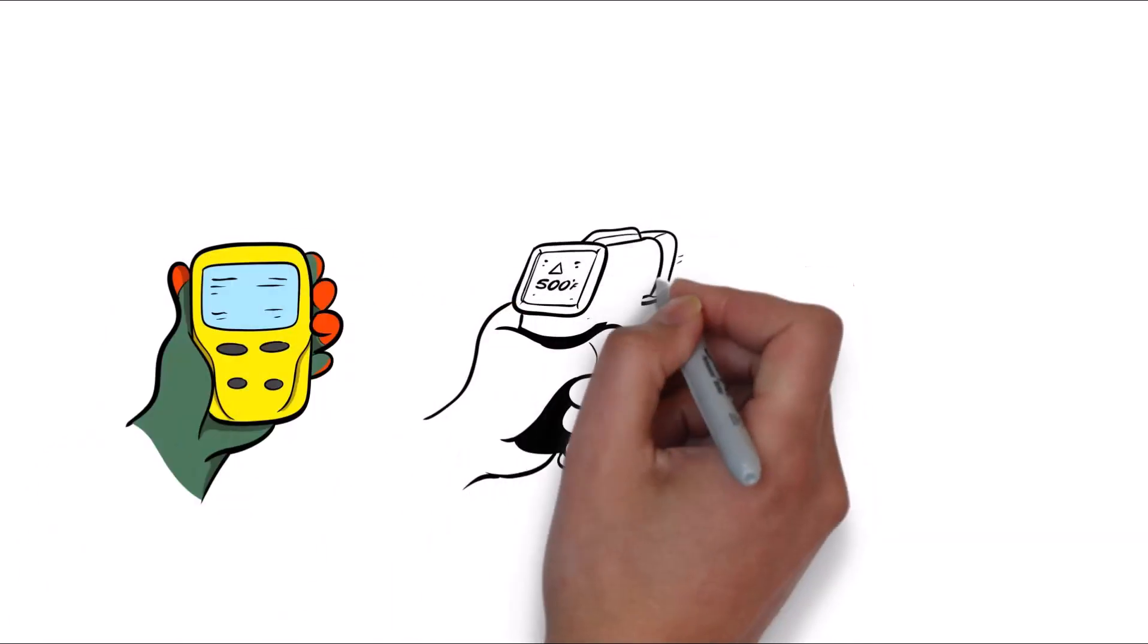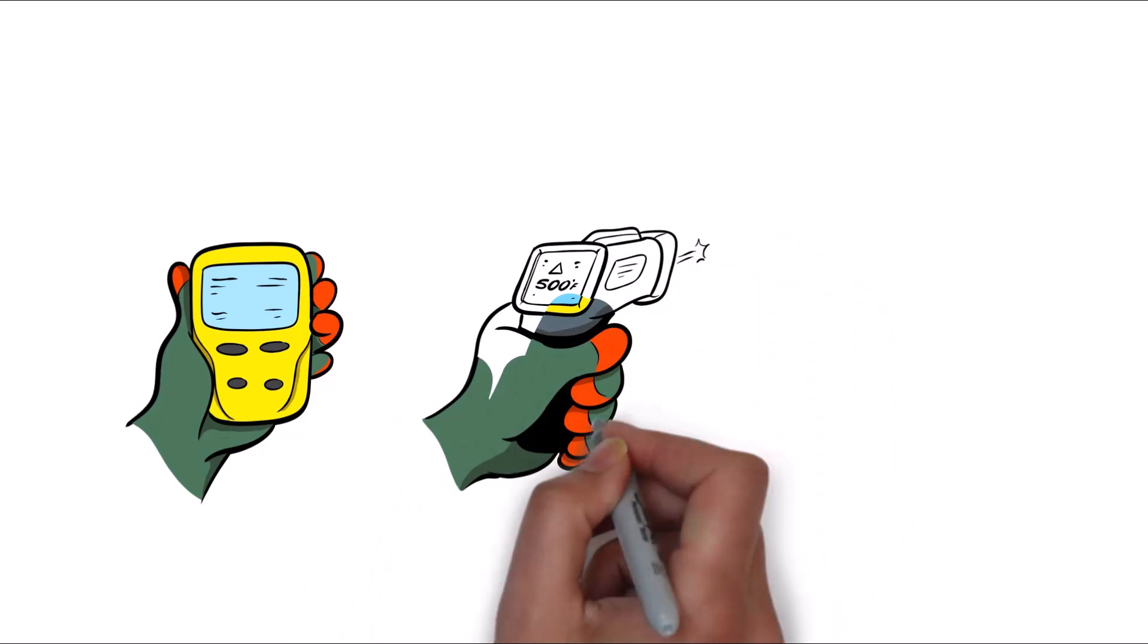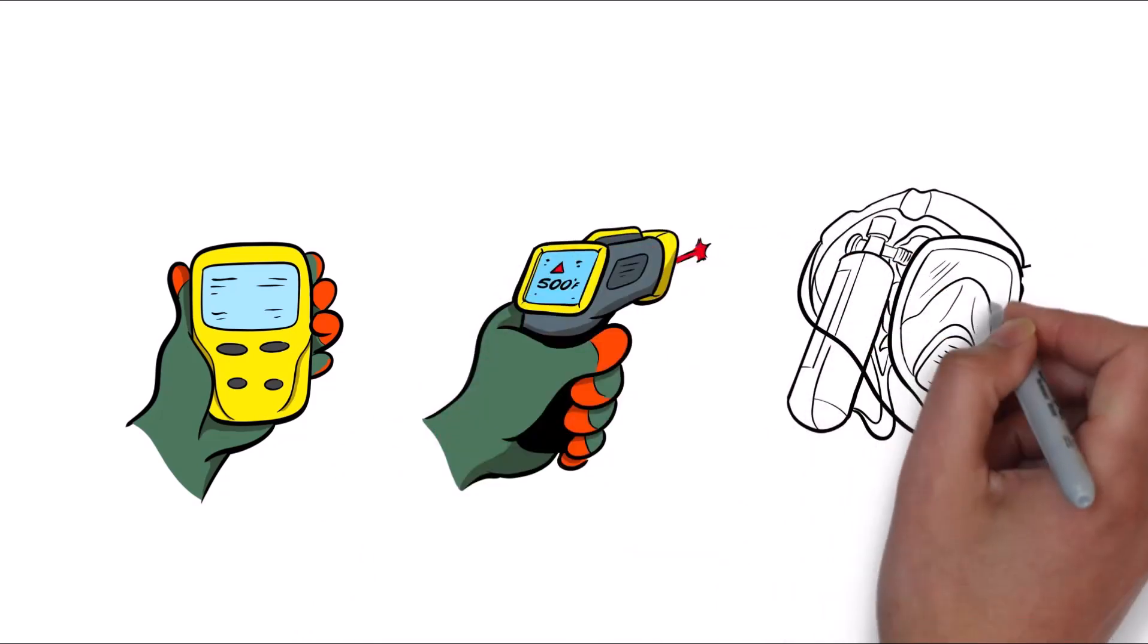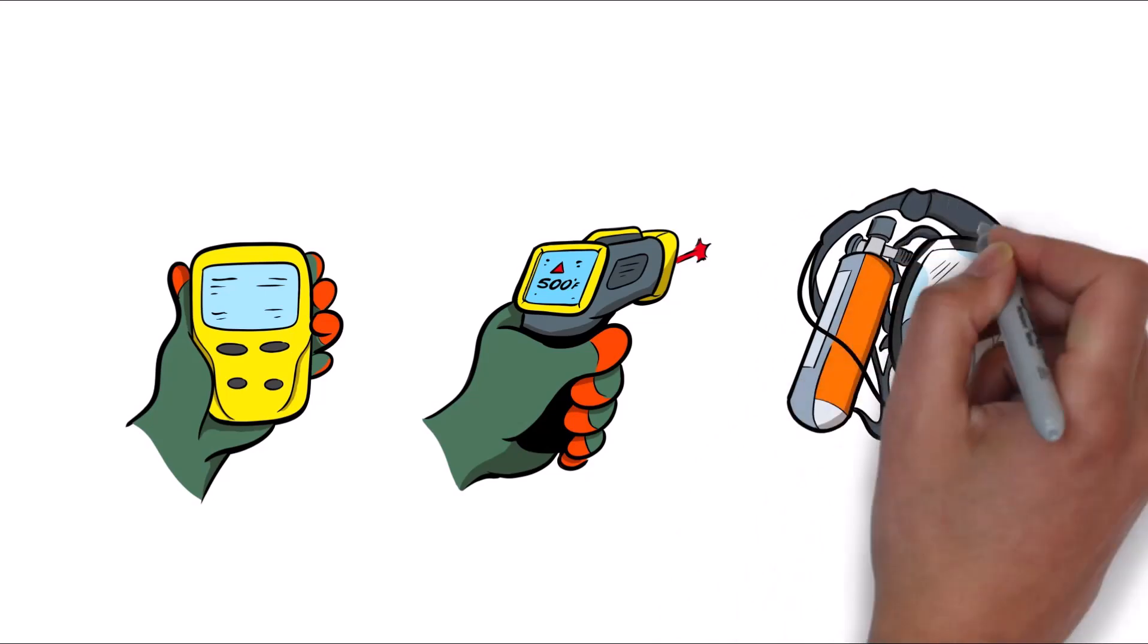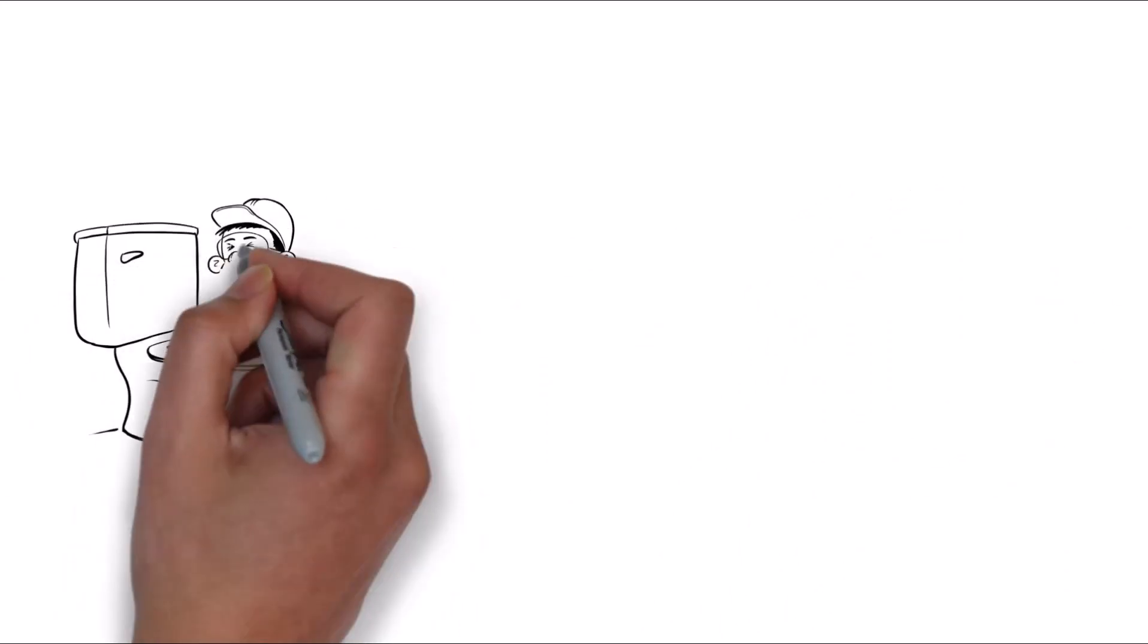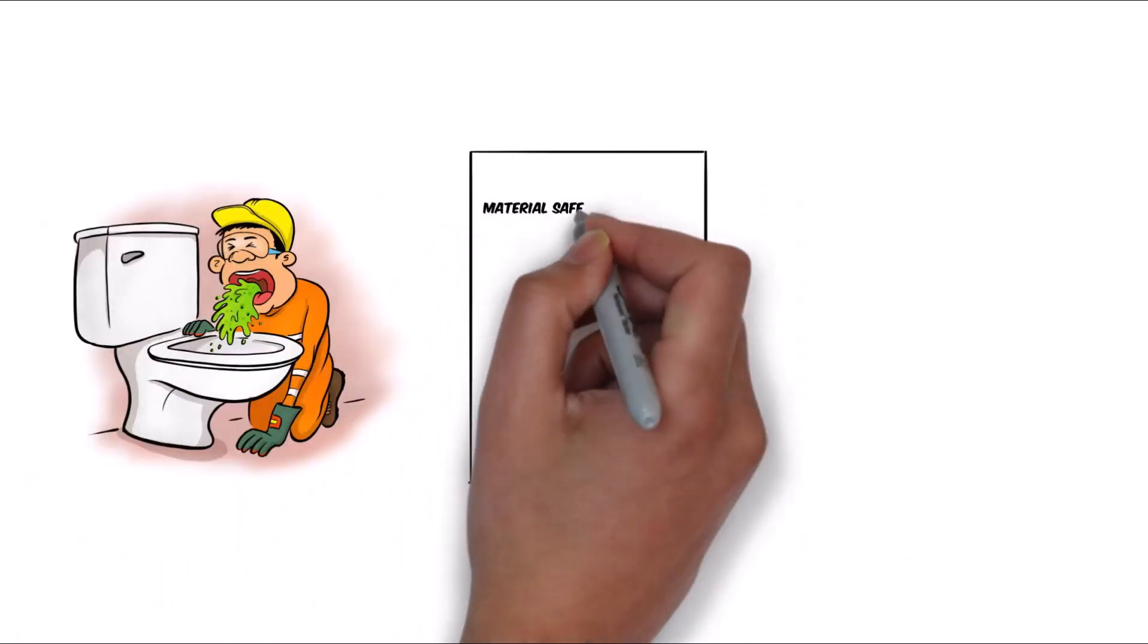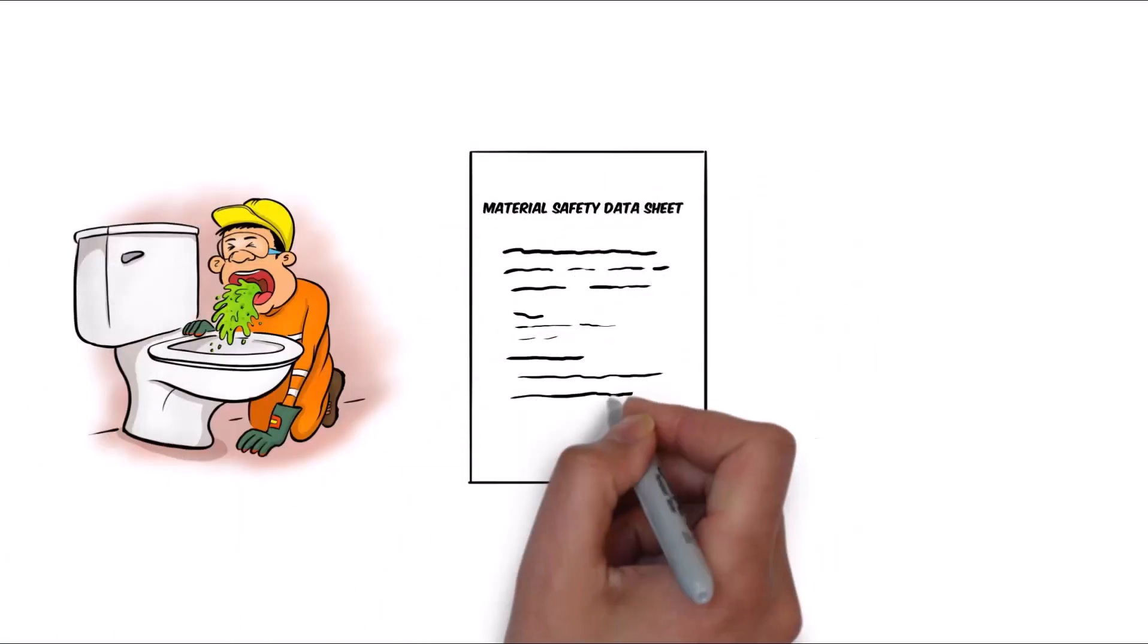The IMO guidance sets out the minimum requirements for conducting safe fumigation. Gas detection equipment and attachments with calibration certificates, infrared handheld thermometer, at least four sets of suitable respiratory protective equipment, and flag state exposure limit values for safe working conditions.